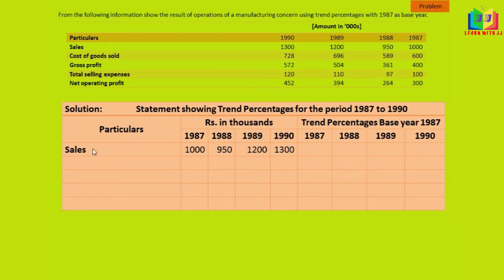First we will write the sales. It is given in descending order, so we will write it: 1987 first, then 1988, 1989, and 1990. I have written everything here — this is the value of sales and the formula used to calculate the trend percentage. This is the format of calculating these trend percentages. So we have to ascertain the percentage of the trend.